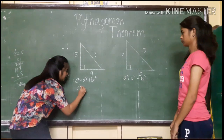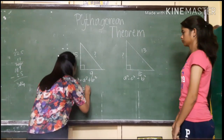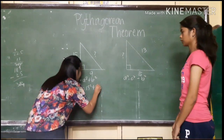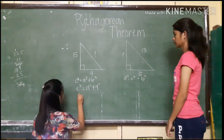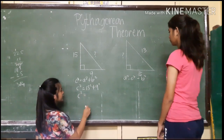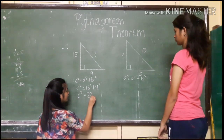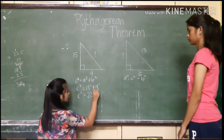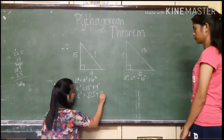So c squared equals 15 squared plus 9 squared. The square of 15 is 225, and the square of 9 is 81.